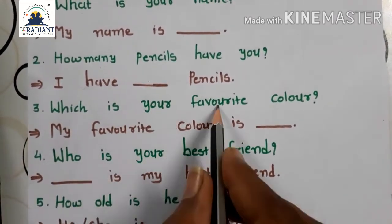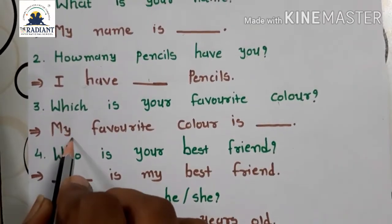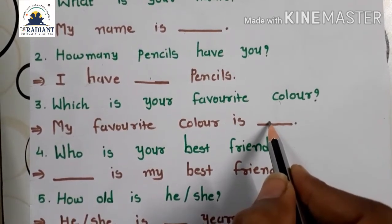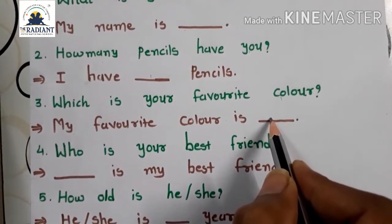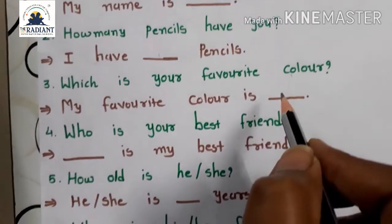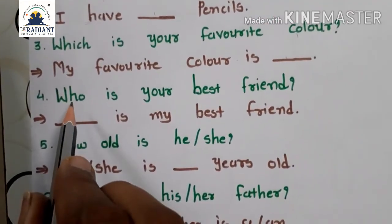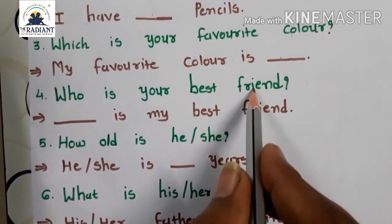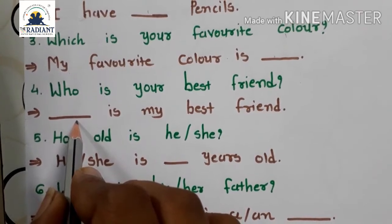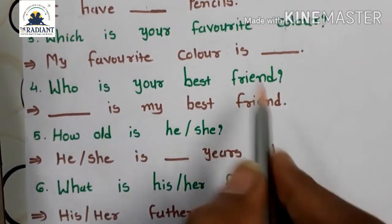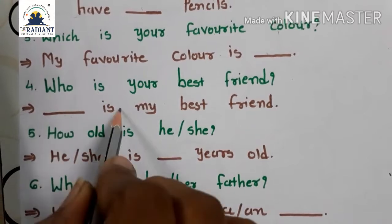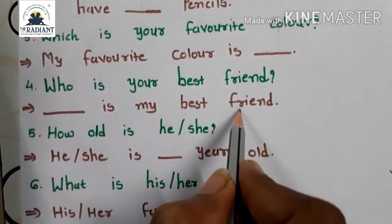Which is your favorite color? My favorite color is... tamarun jay favorite color hoi, itali tamarun yaa fill up karwaanun rèche. Like blue, yellow, green, right? Then next question 4: who is your best friend? Ahiyaan tamarun best friend noo naam lakwaanun rèche. Kalejagyaan is my best friend. Rohan is my best friend. Reena is my best friend.